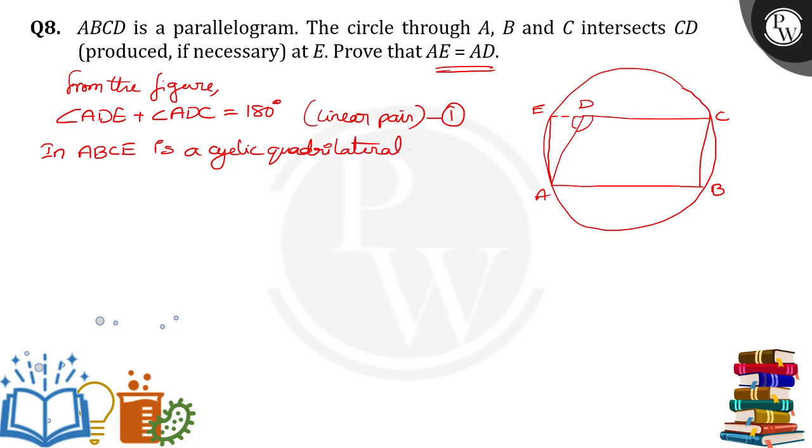When these are cyclic quadrilateral, angle AED plus angle ABC equals 180 degrees. The sum of these two angles is 180 degrees because opposite angles of cyclic quadrilateral sum up to 180 degrees.